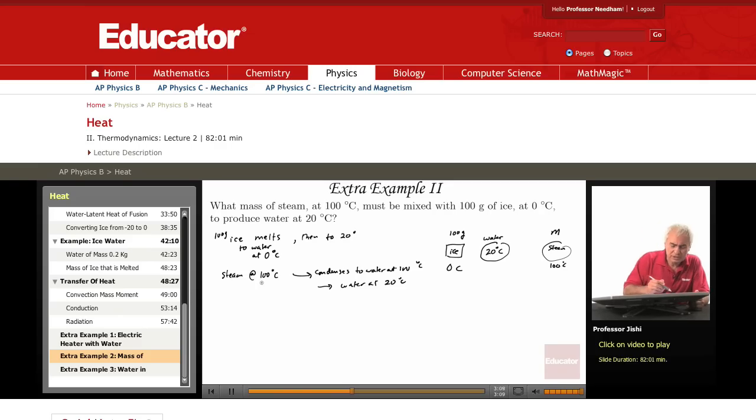Energy conservation tells us that heat gained must equal the heat lost. The heat gained is gained in two steps, first ice melts.